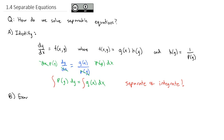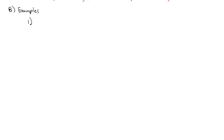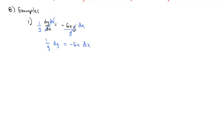So let's look at some examples of separable equations. Let's start with dy/dx equals negative 6xy. Because the dy is in the numerator on the left, we're going to put the y's on the left — I'm going to divide both sides by y, or multiply by 1 over y. That'll move all the y's to the left, and I'm also going to multiply both sides by dx to move it to the other side. That leaves me with 1 over y dy equals negative 6x dx. Now we integrate: the antiderivative of 1 over y is the natural log of y, and negative 6x integrates to negative 3x squared plus a constant.